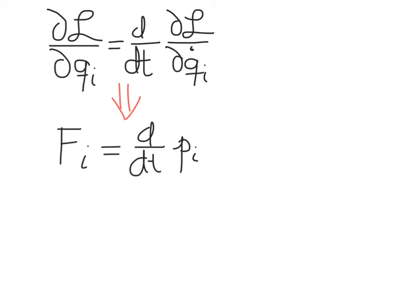The equation at the top here is the Euler-Lagrange equation as applied to the Lagrangian. This provides a relationship between the partial derivative of the Lagrangian with respect to a generalized coordinate qi, and the partial derivative of the Lagrangian with respect to a generalized velocity qi dot. Very often we've found that this relationship exactly replicates Newton's law — basically that the i-th component of the net force is equal to the time derivative of a linear momentum.